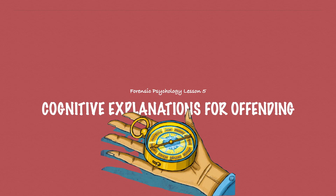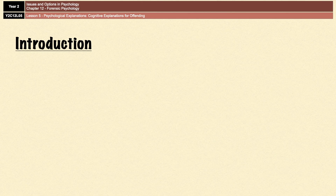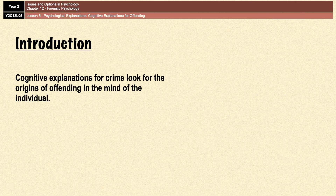Welcome back to another A-level forensic psychology video. Today we're going to be focusing on cognitive explanations for offending, and as usual we'll cover the outline bits first, and then move on to the evaluation points before finishing off with a six mark outline so that you can see how all of this would fit together in 200 words or less.